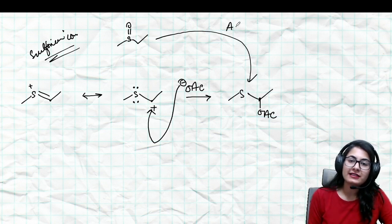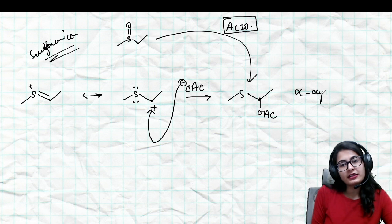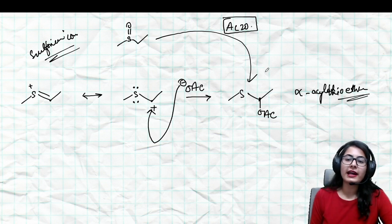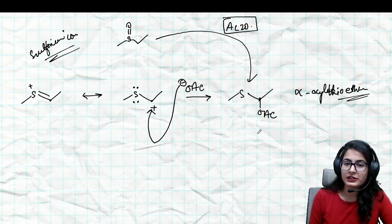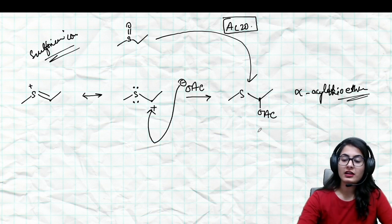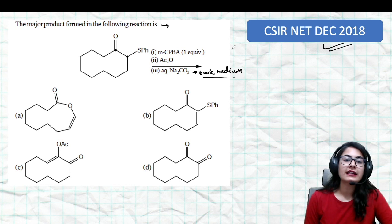and just in the presence of acetic anhydride you're going to end up with alpha acyloxy thioether. This is what you end up with. The same reaction we're going to utilize - Pummerer rearrangement in the previous year question.